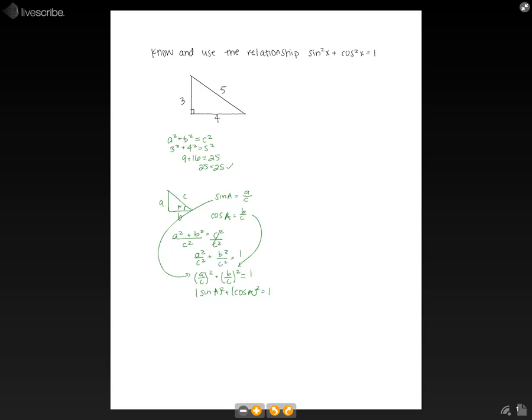So now let's apply this to our 3, 4, 5 triangle. We know that if we have our angle A here, sine of A will be our opposite over hypotenuse, which is 3 over 5.